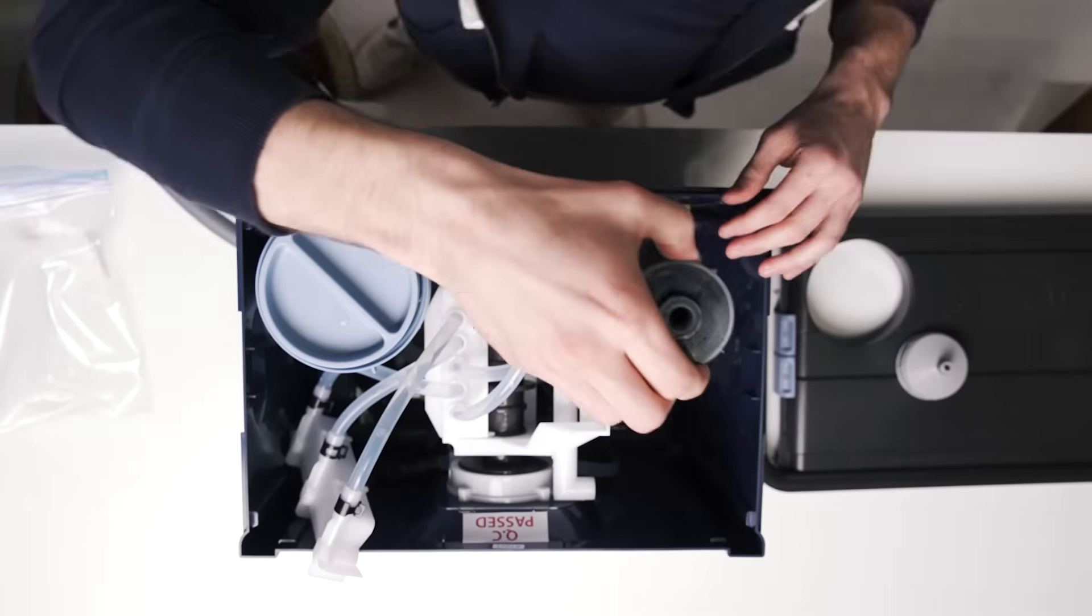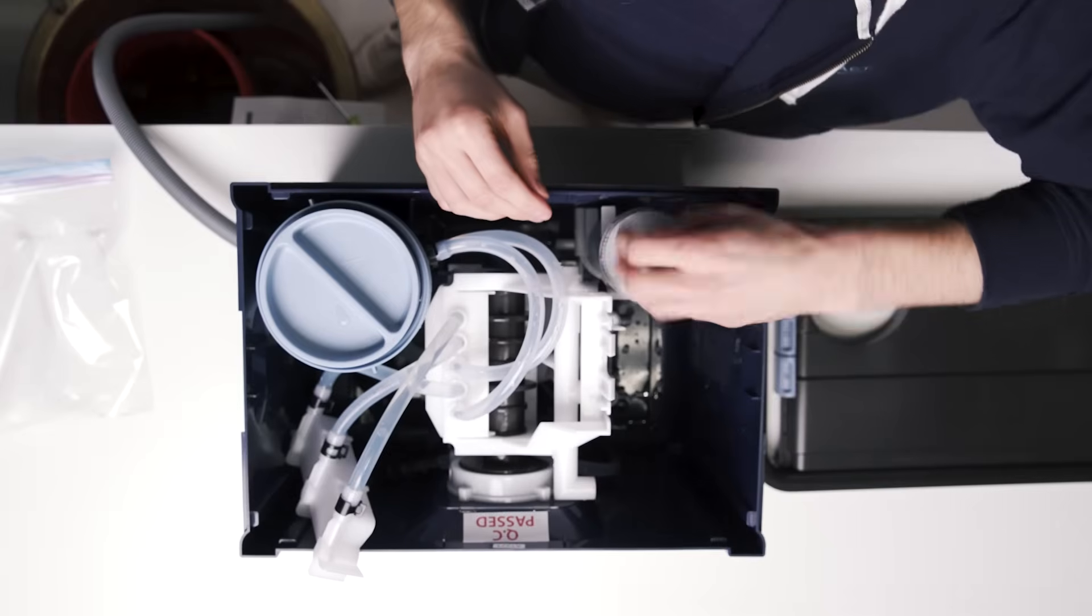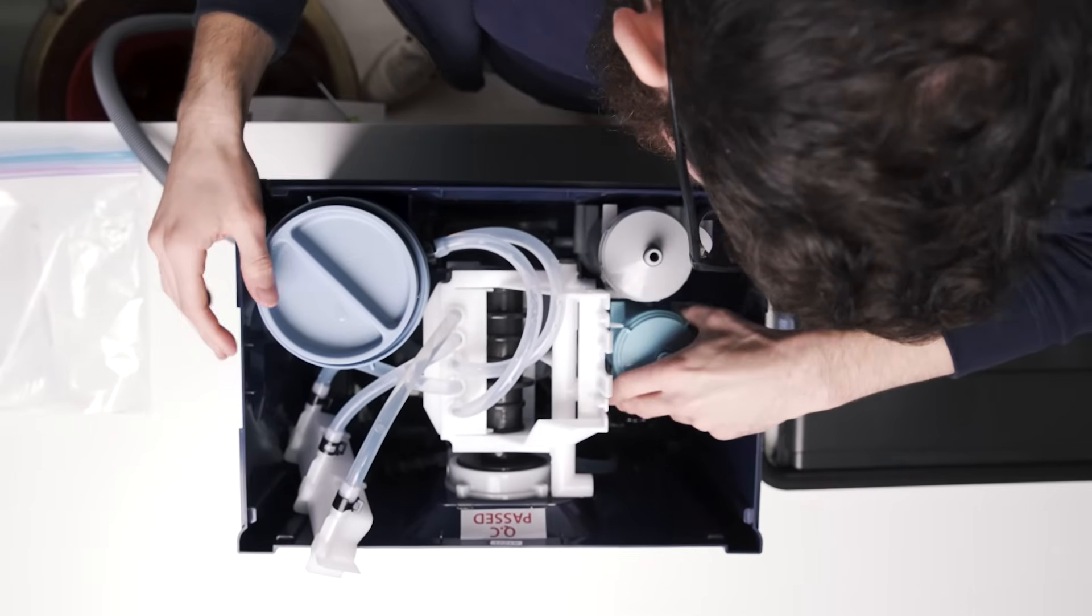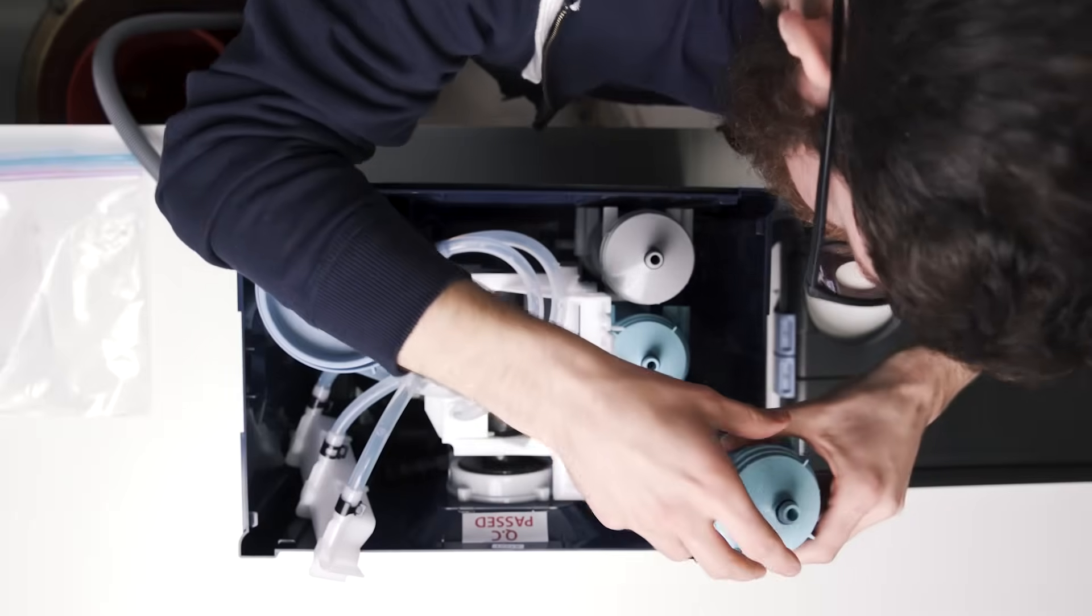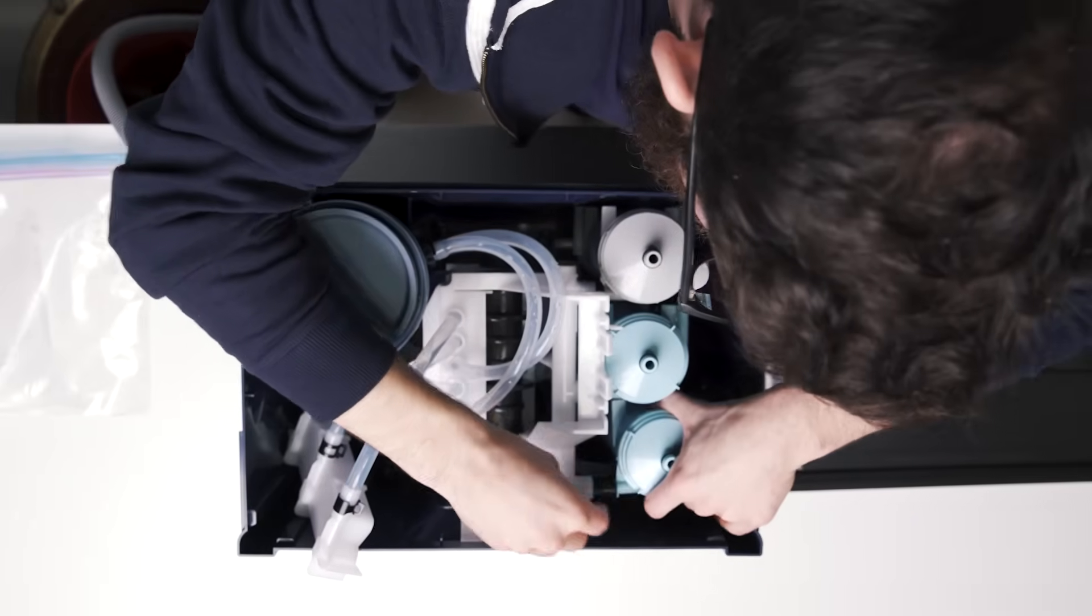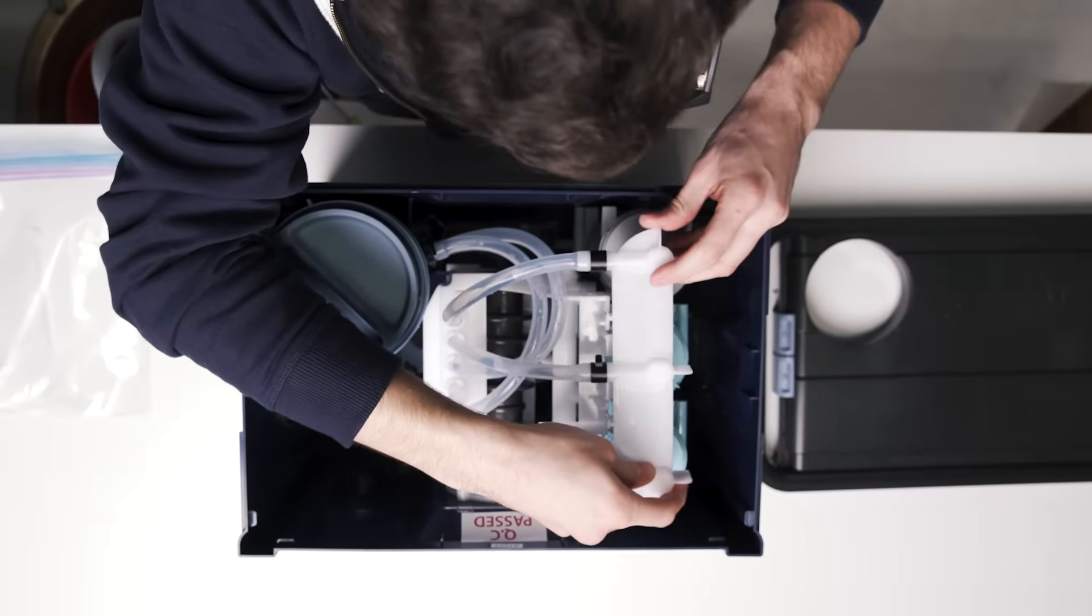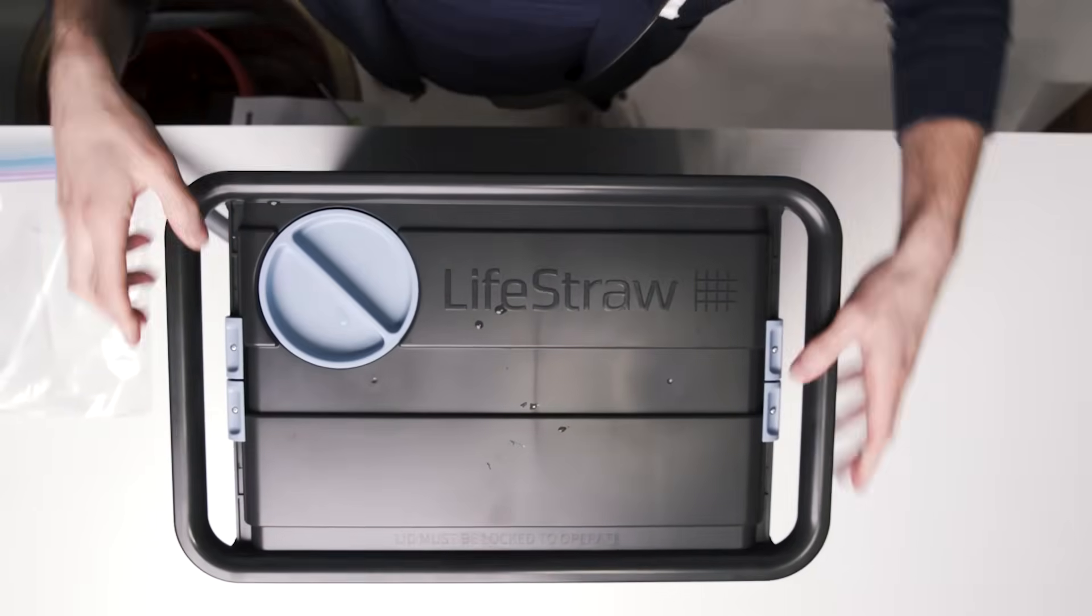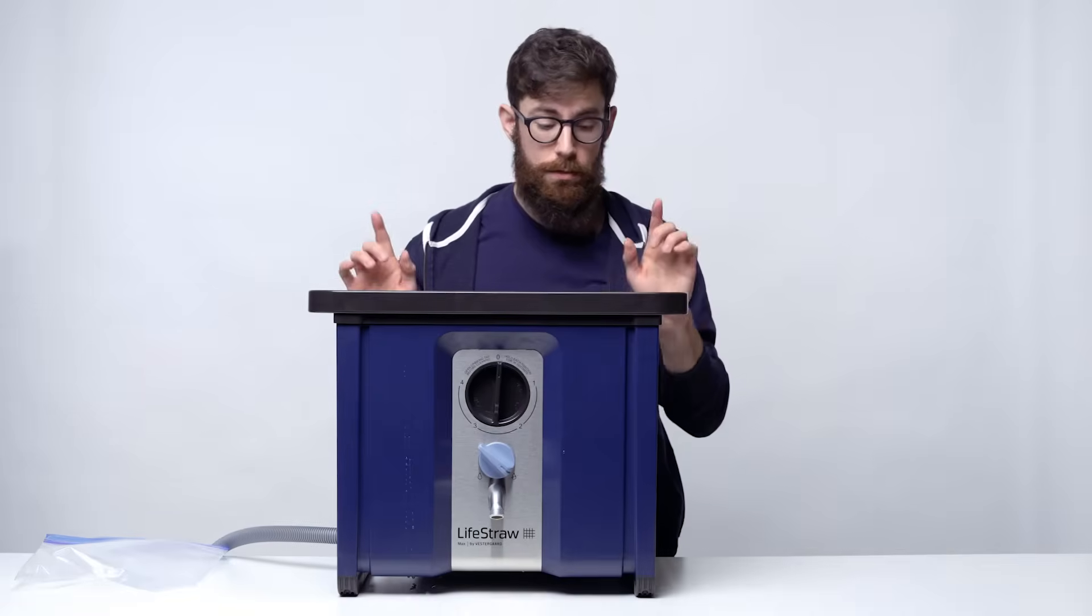Whenever you're ready to start using your Max again, reinstall your carbon and both of your membrane ultra filters, making sure that they are firmly placed on the bottom and top. Replace the filter bridge. Snap it in location. And you're ready to go. After everything's reinstalled, make sure you do a backwash.